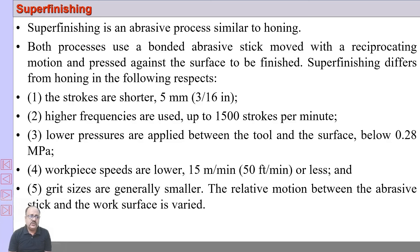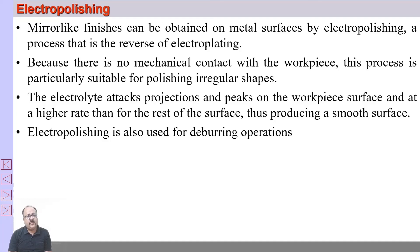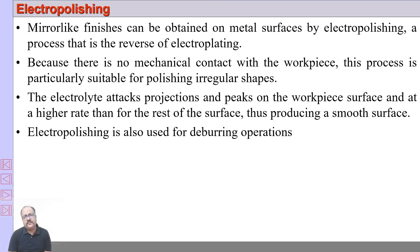Lastly, electro polishing is mainly used for removing small errors in the surface or achieving a very good surface finish. It is an electrochemical process where the electrolyte attacks the projections and peaks on the work surface at a higher rate than the rest of the workpiece, thus producing a very smooth surface. Electro polishing is frequently used for rewiring operations. We have discussed different kinds of finishing operations; there are other finishing operations such as magnetic-type finishing which are also frequently used in industry. Thank you for watching — if you have any doubts, please contact me or put them in the comment box.